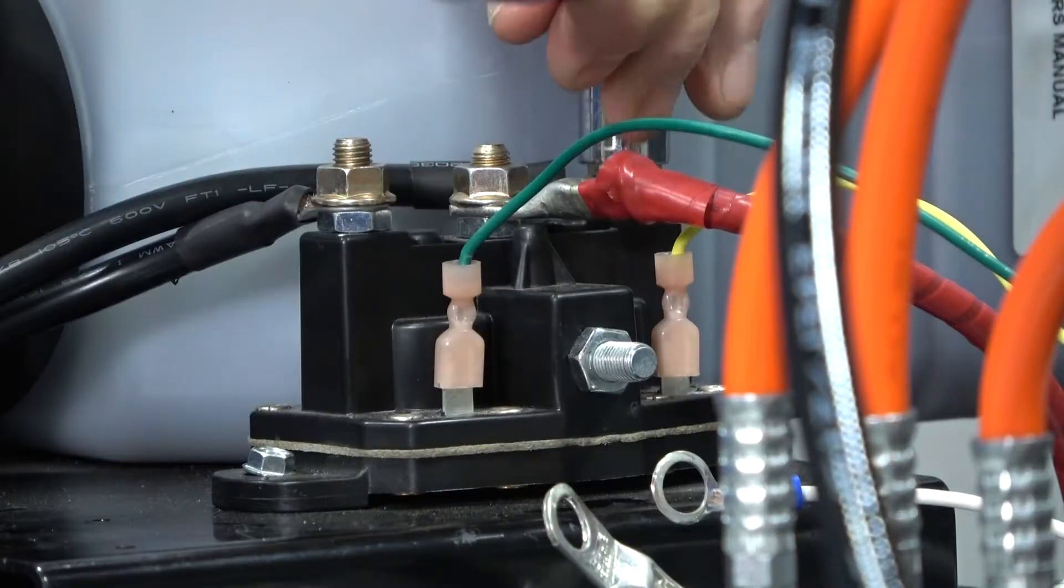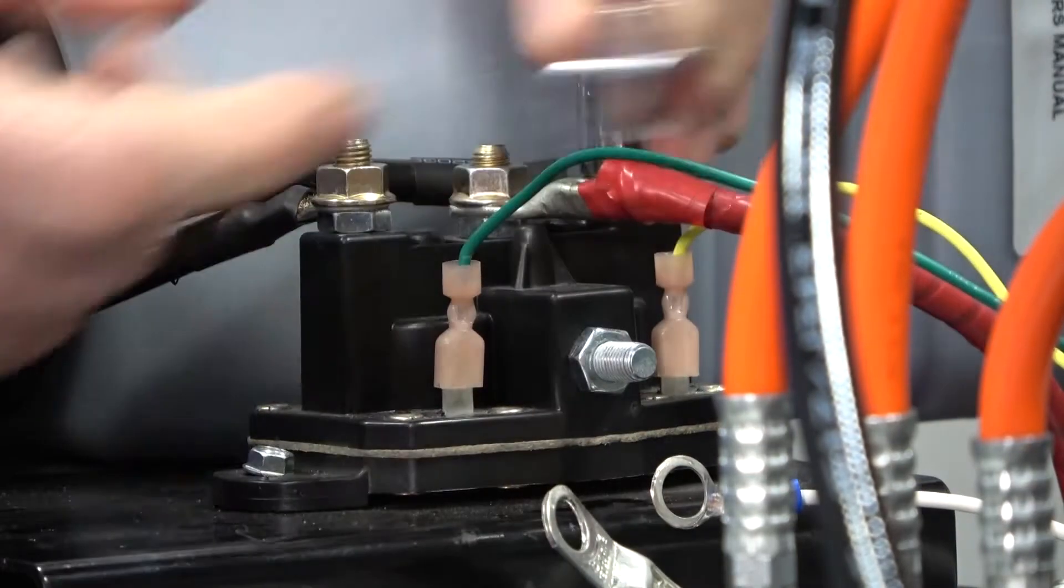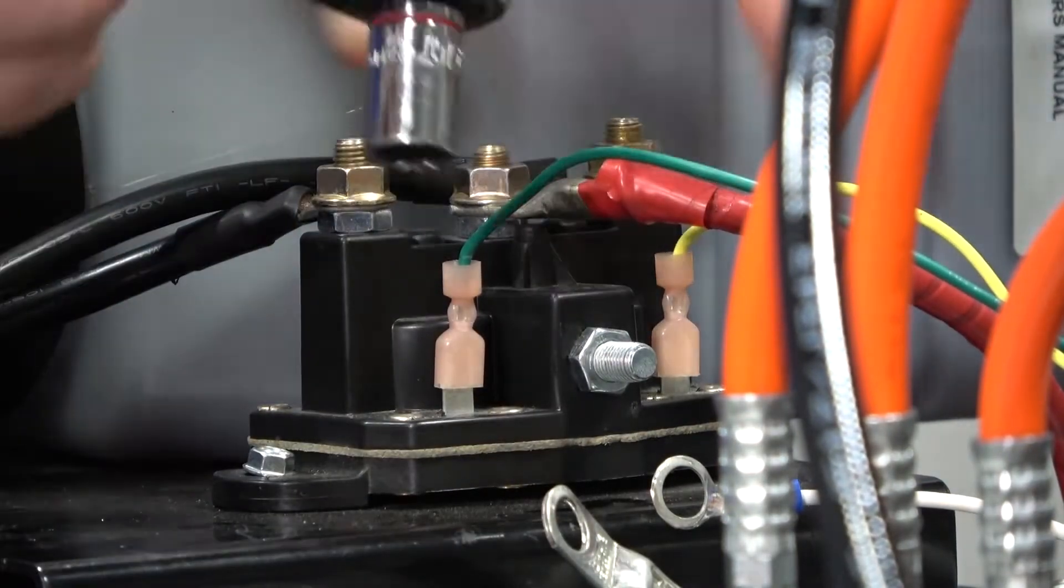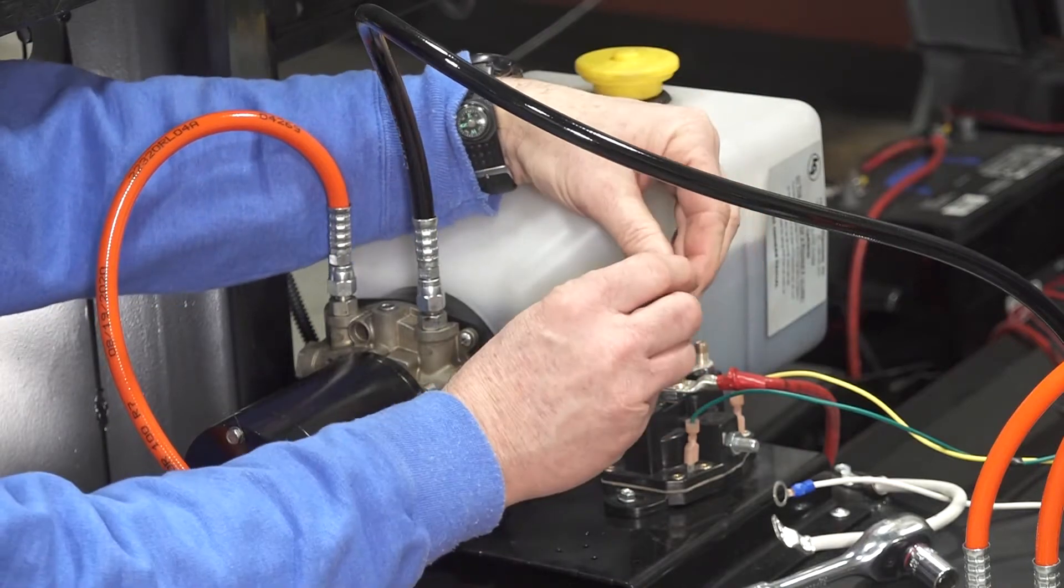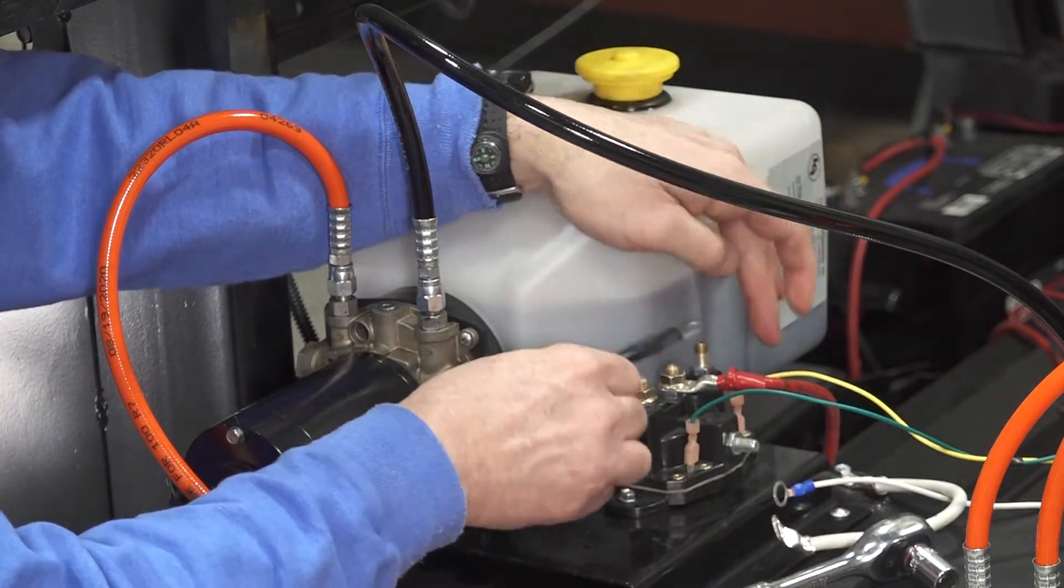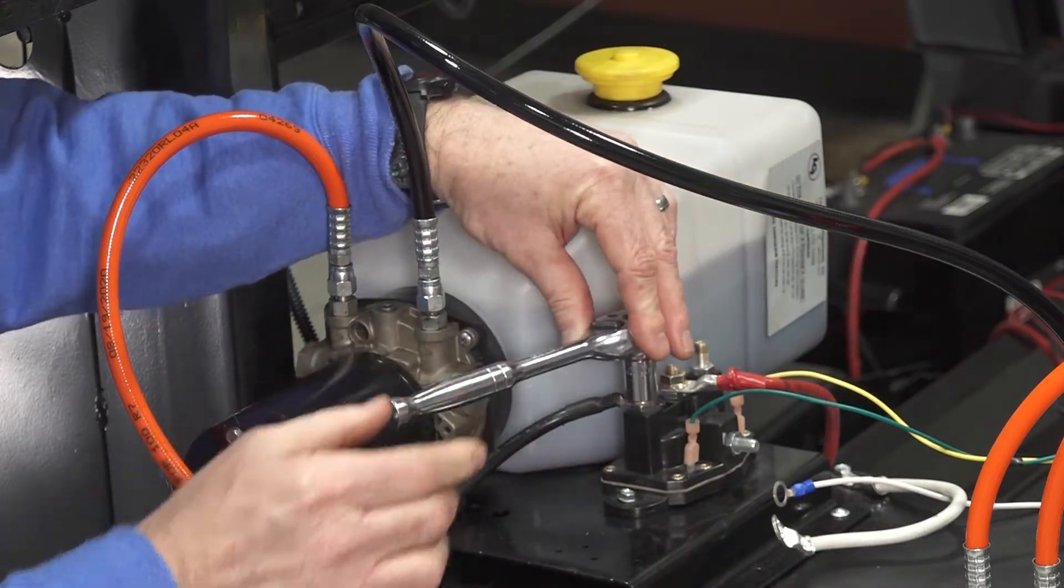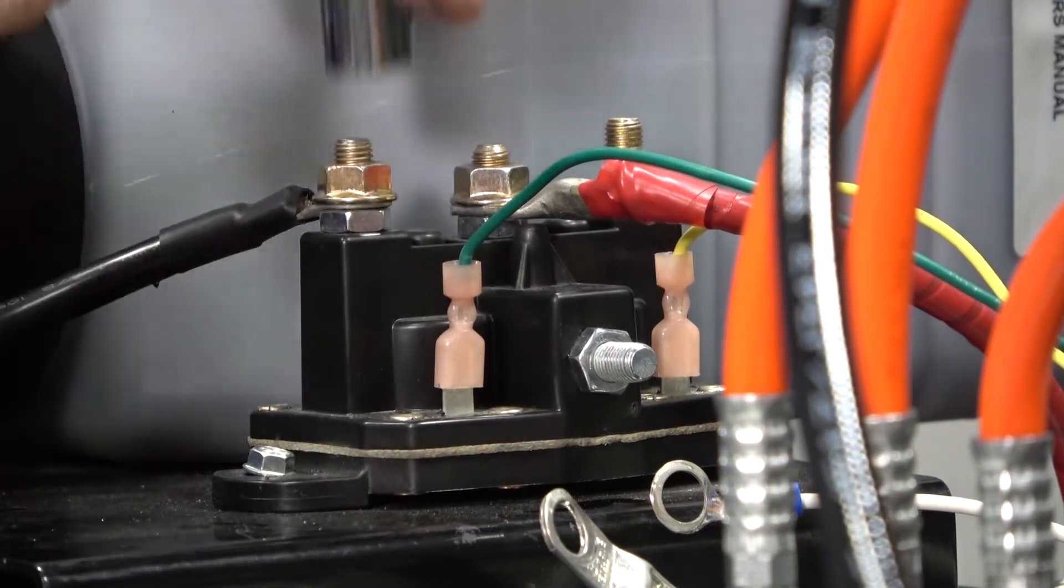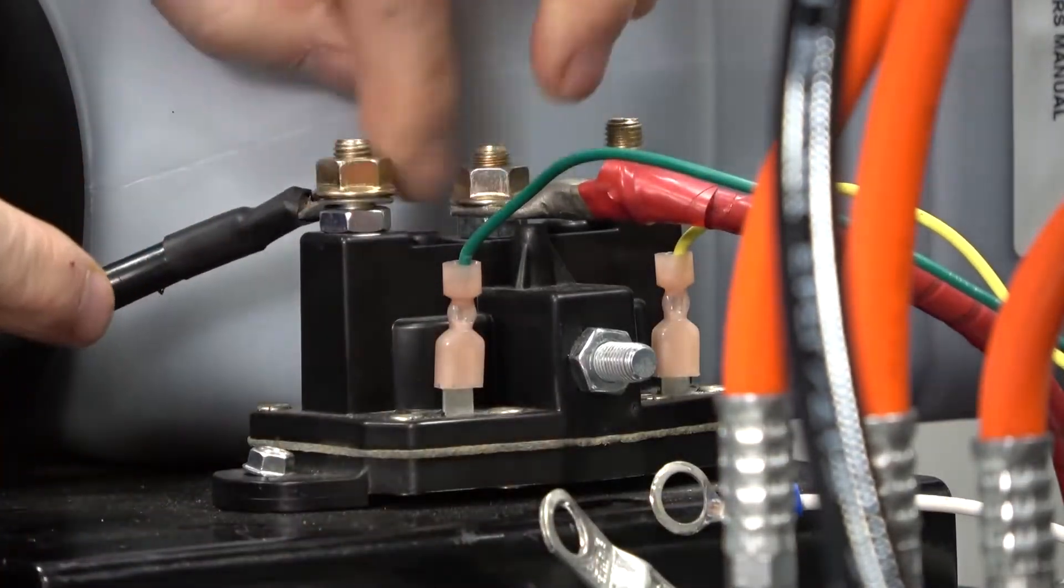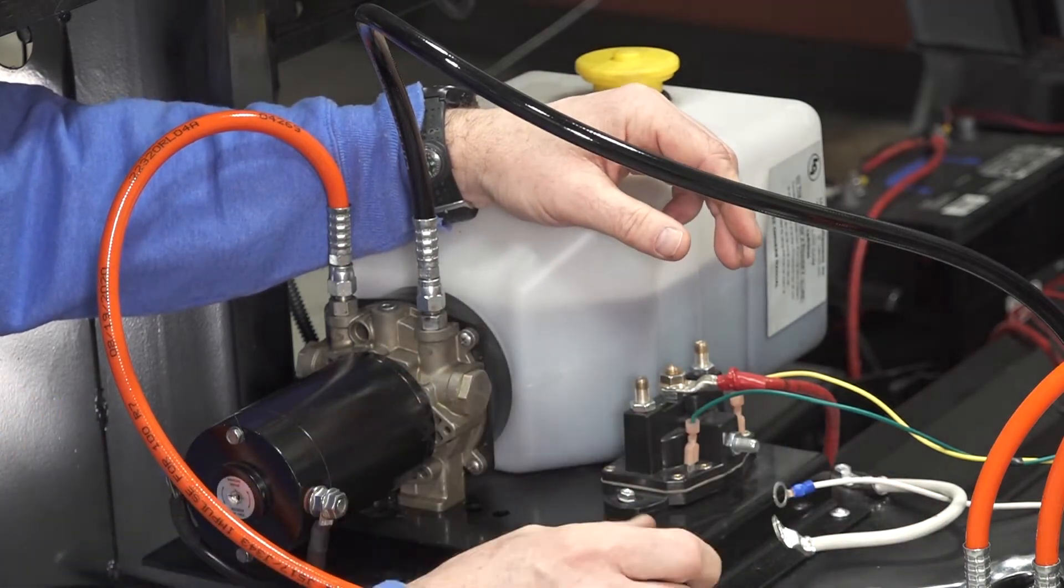Next, remove the motor wires from the two top posts. After that, we remove the positive wire from the top center post.